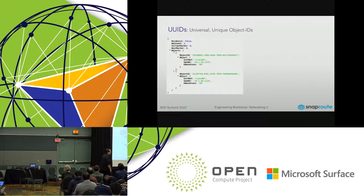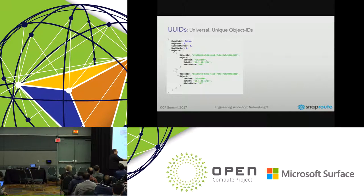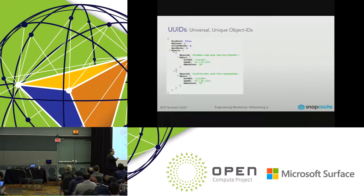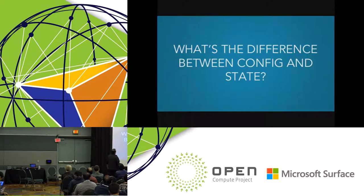The object ID is generated when you configure or create the object. You can use it programmatically to grab all interfaces, step through them, and pull more information — allowing you to scale correctly so you're not always dumping everything at the same time.